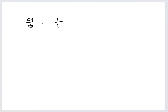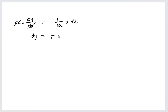Let's have a second example. Now let's say we're given dy/dx equal to 1 over 3x. If we multiply both sides by dx — and note that d/dx is an operator, not a simple fraction, though we can treat it symbolically — we get dy equal to one-third multiplied by (1/x) dx.